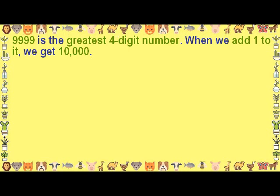9999 is the greatest 4-digit number. When we add 1 to it, we get 10,000. 9999 plus 1 is equal to 10,000.